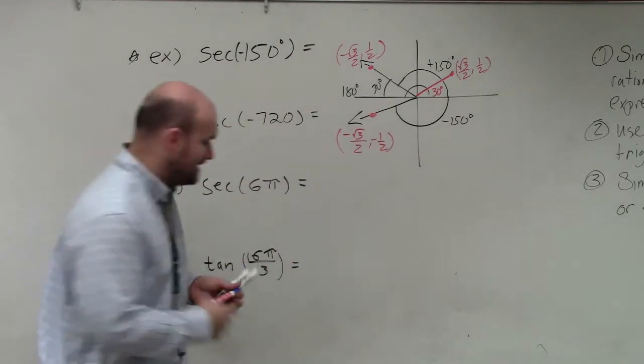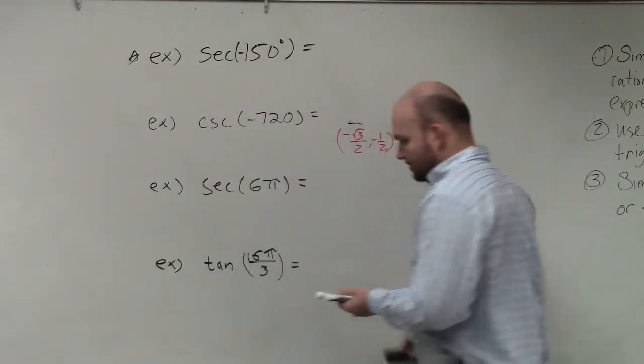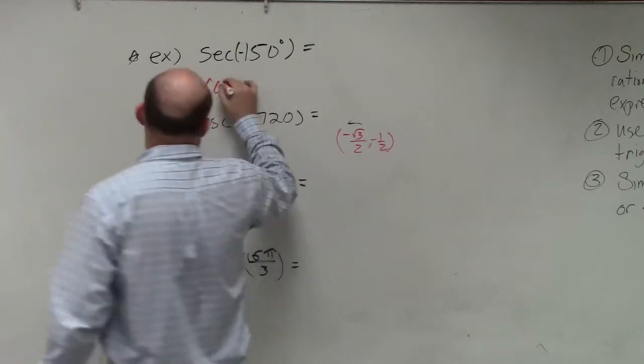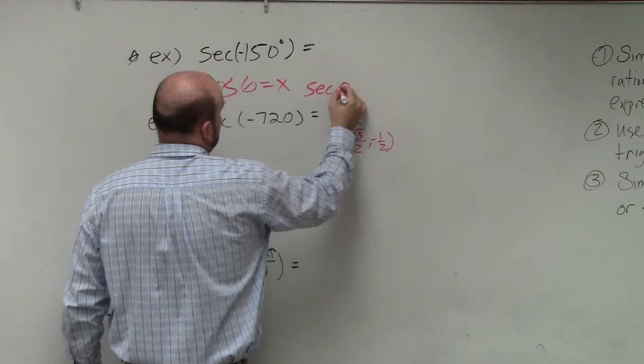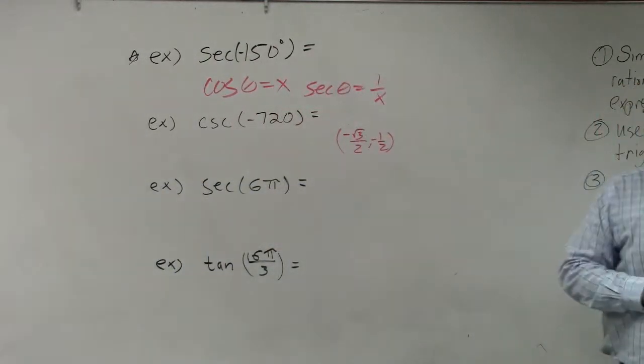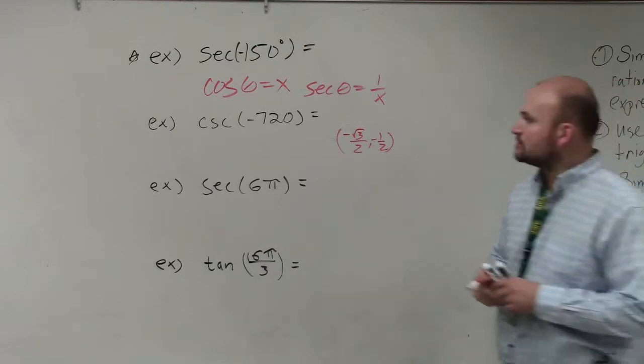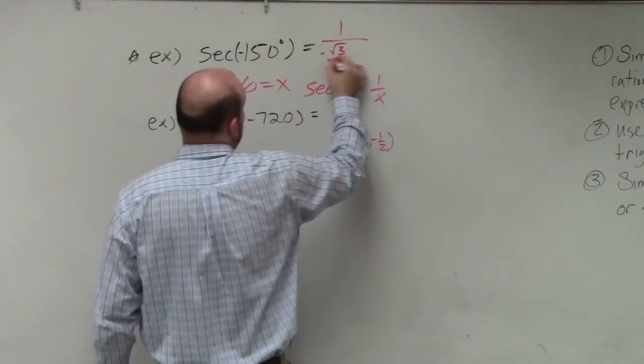Now it's asking you to find secant. So I'm going to erase this. Secant of any angle is equal to 1 over x. So the x-coordinate in this case is negative square root of 3 over 2. So I do 1 over negative square root of 3 over 2.